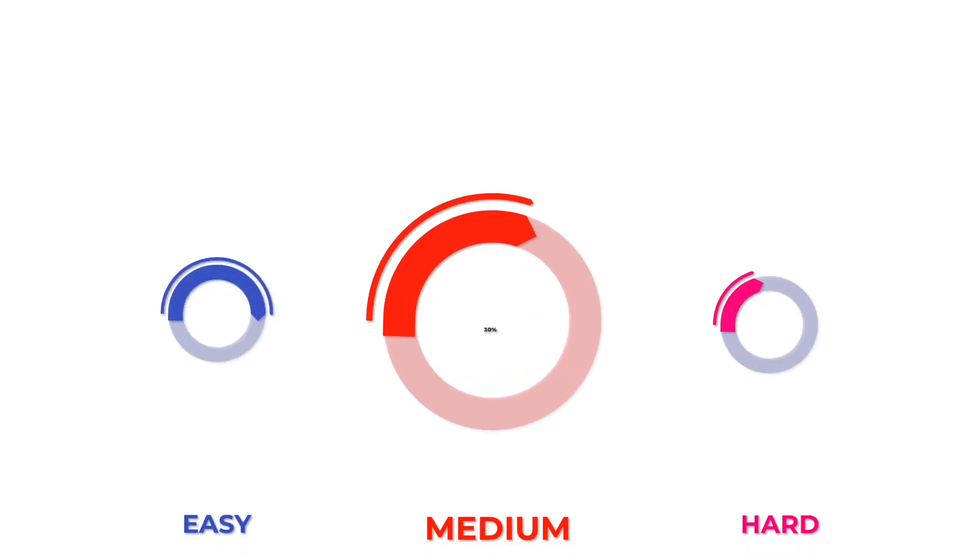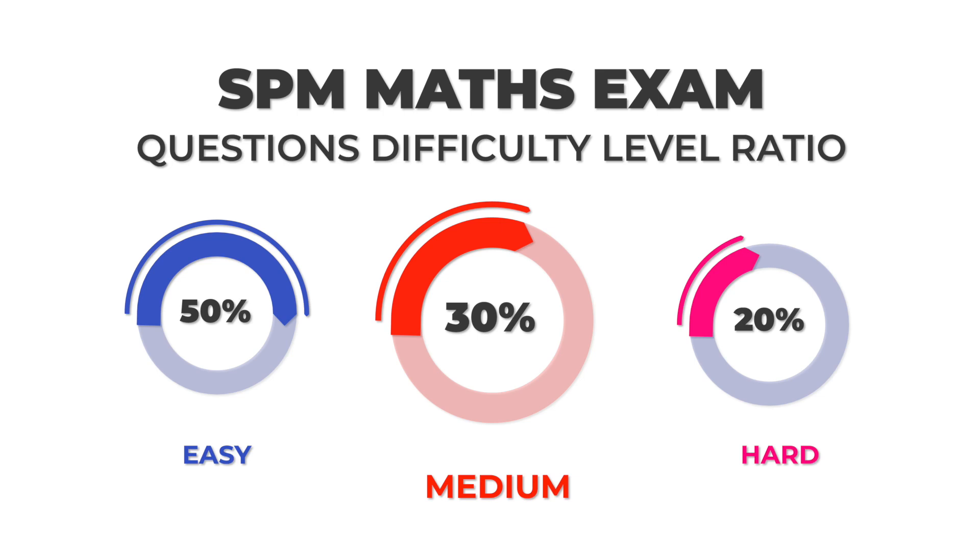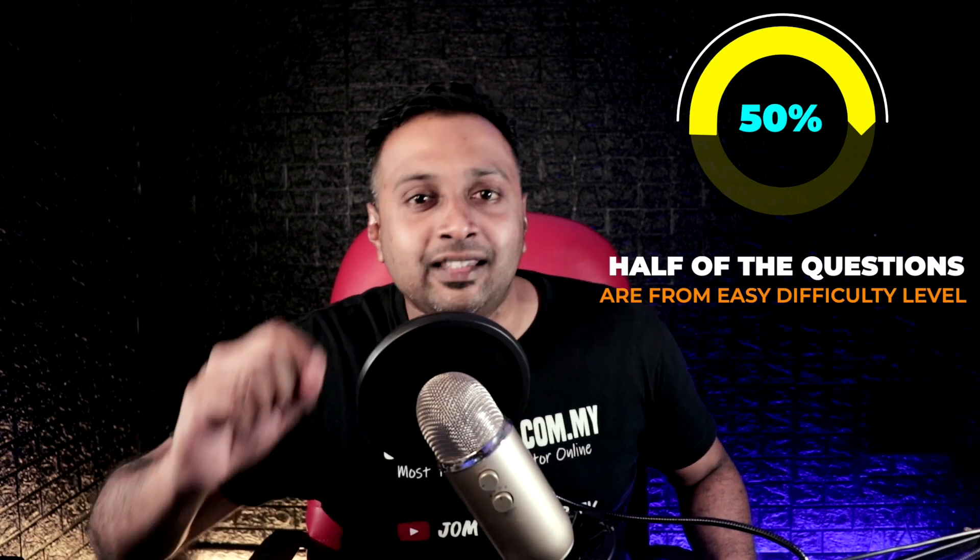Here's the logic behind it. Every exam paper you sit for has questions set from different levels. For example, in SPM Mathematics, the paper is set in a ratio of 5:3:2 — meaning out of 10 questions, five are easy level, three are moderate level, and two are hard. If you don't know about this, be happy because 50% of the questions in your exam are easy type.